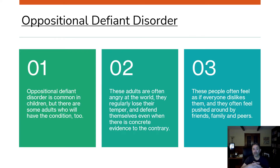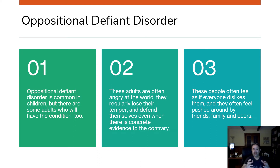Oppositional defiant disorder is commonly found in children, but there are some adults who will also have this condition. These adults are often angry at the world, regularly lose their temper, and defend themselves even when there is concrete evidence to the contrary. These people often feel as if everyone dislikes them, and they feel pushed around by friends, family, and peers.